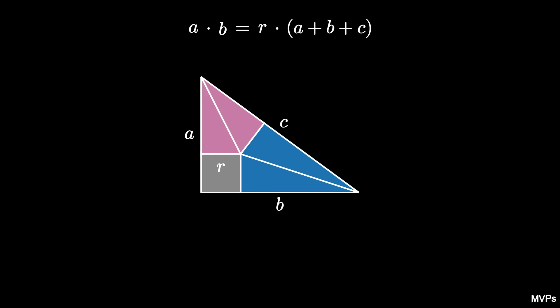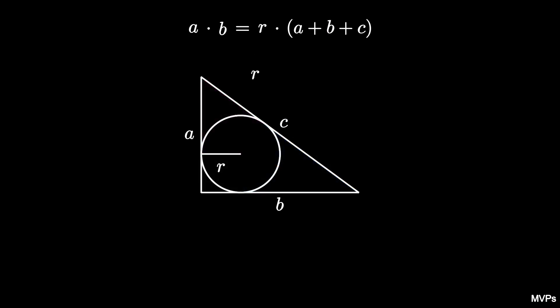But then we can use this equality to find that R is equal to A times B divided by A plus B plus C, giving us a formula for the in-radius of a right triangle in terms of its side lengths.